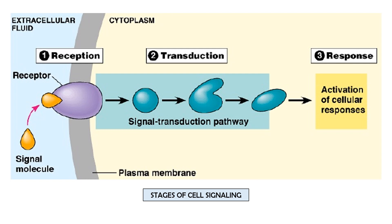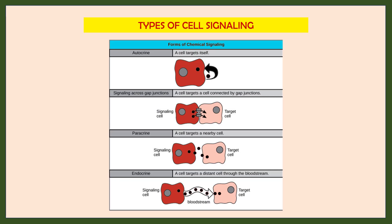If the effector protein is a metabolic enzyme, it will alter the metabolic pathway. If the effector protein is a transcription regulatory protein, it will alter gene expression. If the effector protein is a cytoskeletal protein, it will alter cell shape or movement. So depending on which pathway or which effector protein is involved, we get a particular type of response.